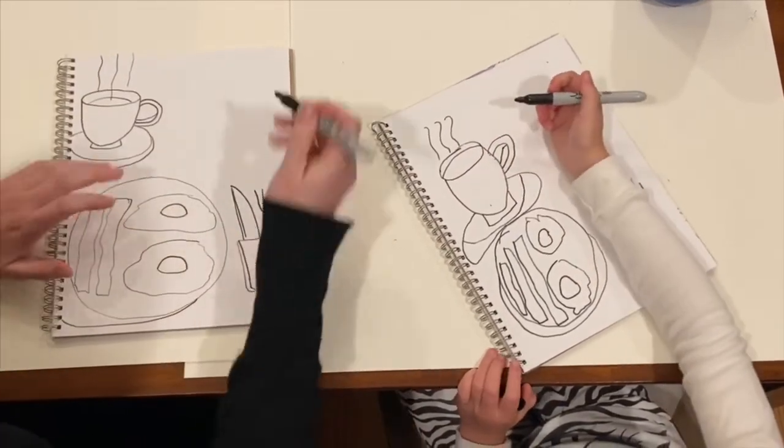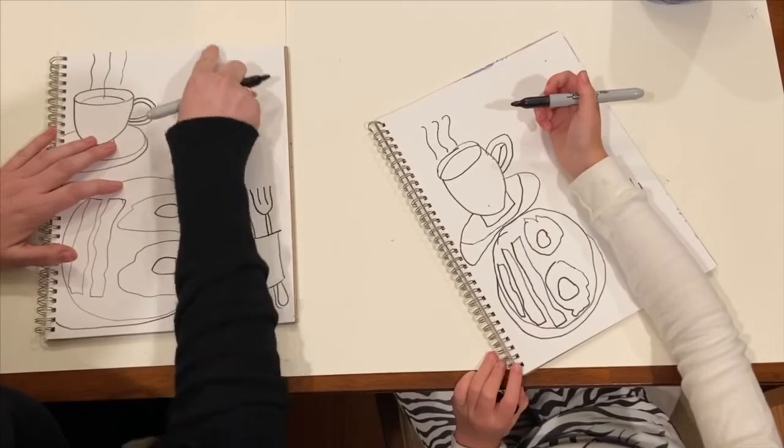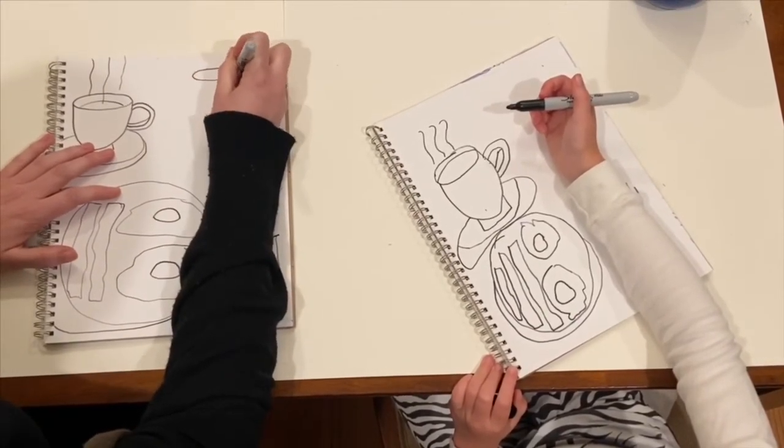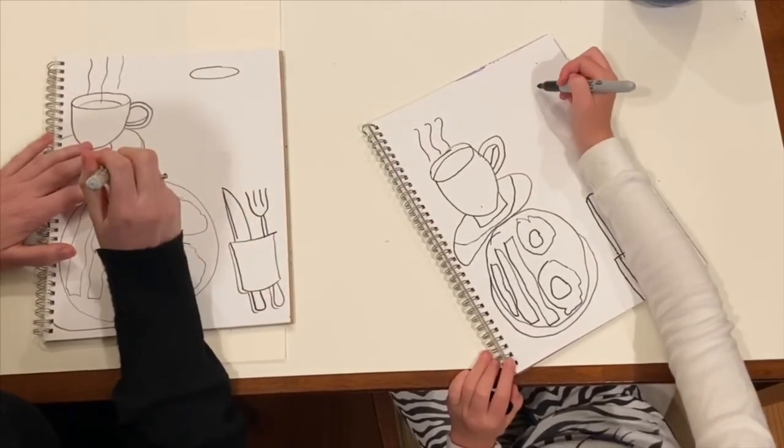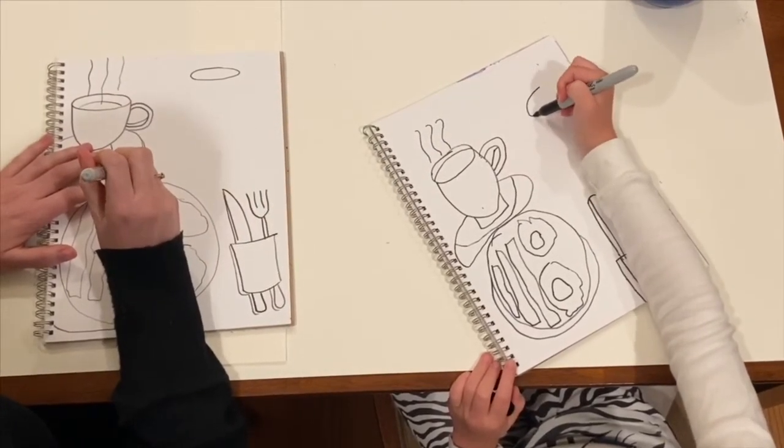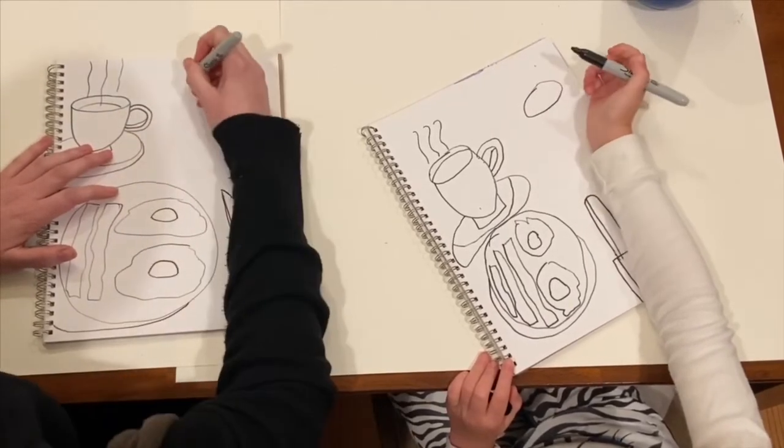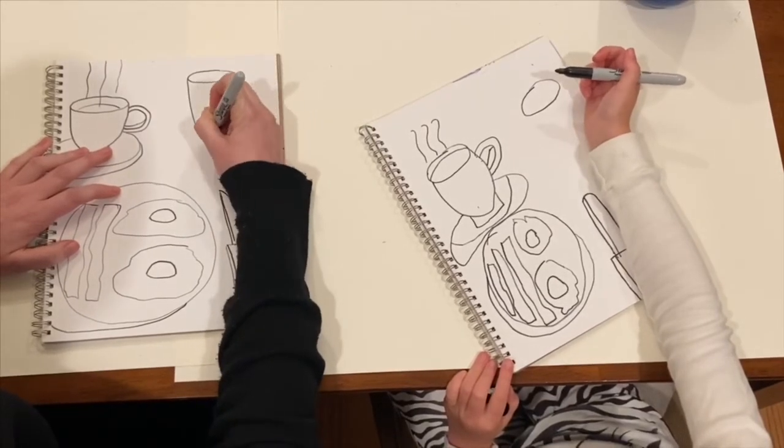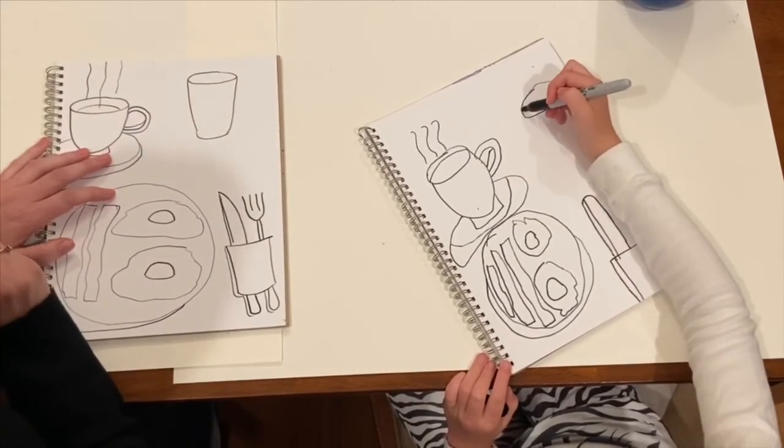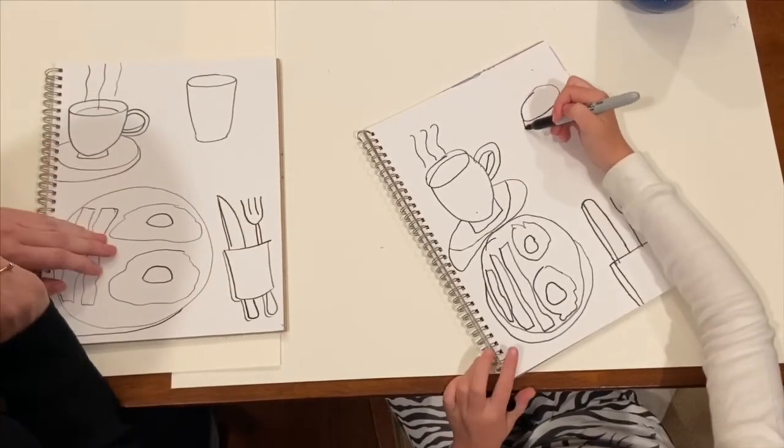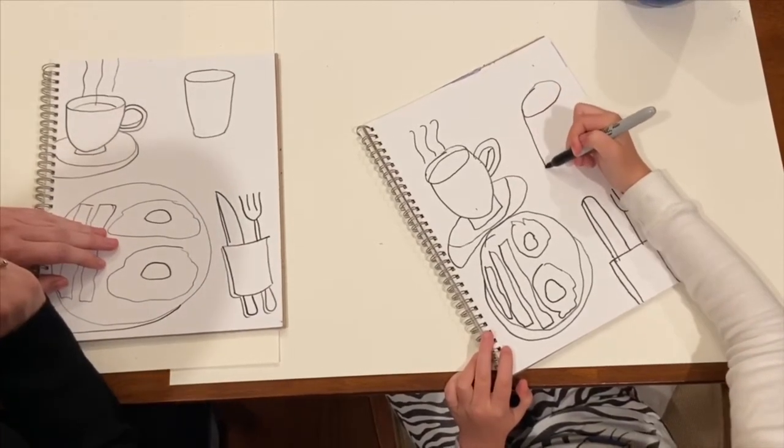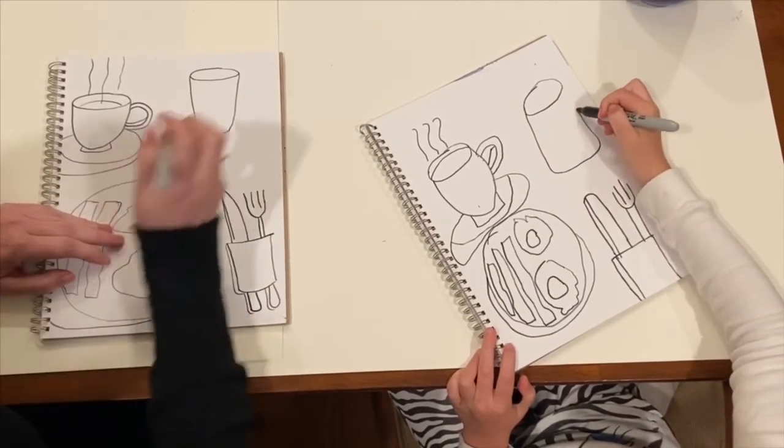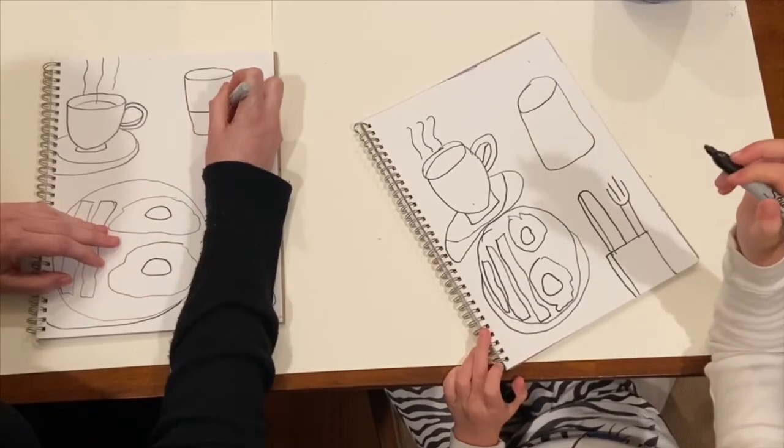My last thing I'm going to draw is a cup of water. So I'm going to come just slightly below the top and make another oval. Then I'm going to taper my glass to get narrow at the bottom.